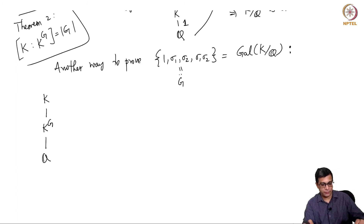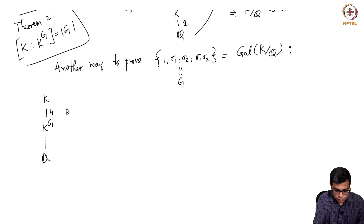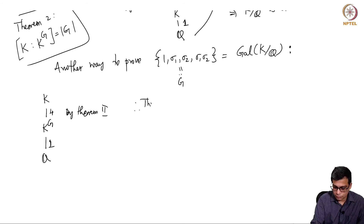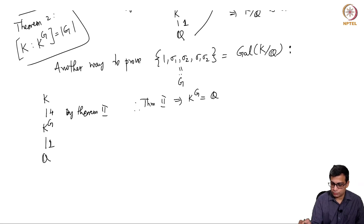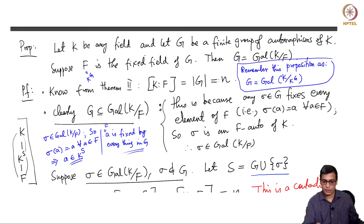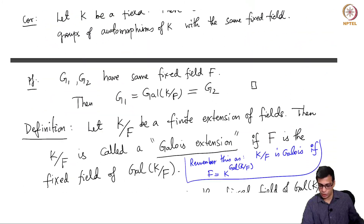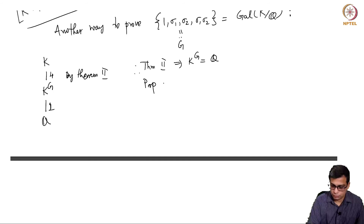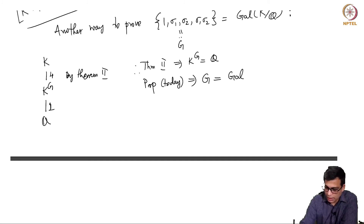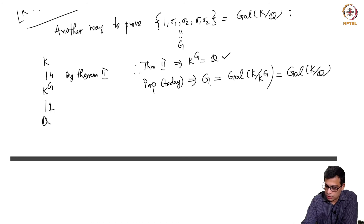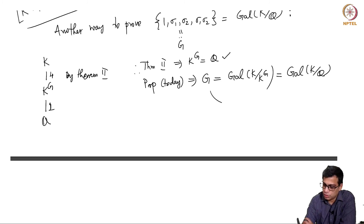By the proposition we proved today, G = Gal(K/K^G). Since K^G = Q, G = Gal(K/Q). And since the fixed field K^G = Q = F, we conclude K over Q is Galois. So these are various strands of ideas coming together.